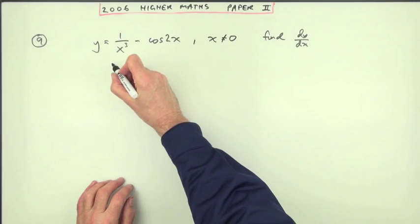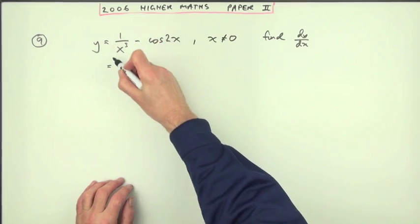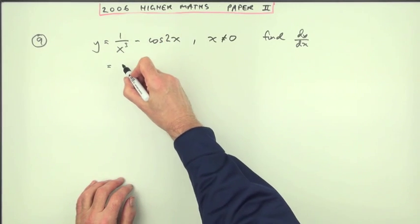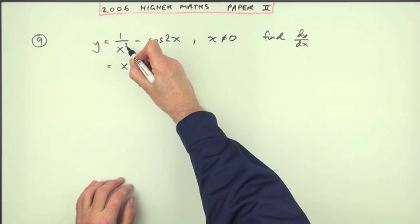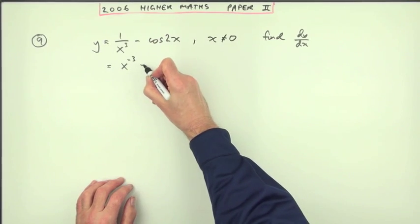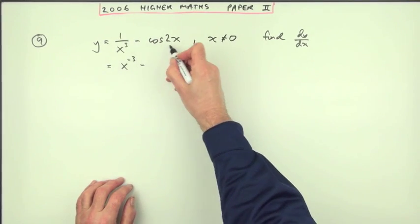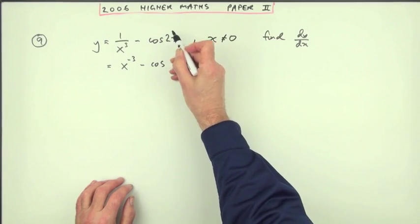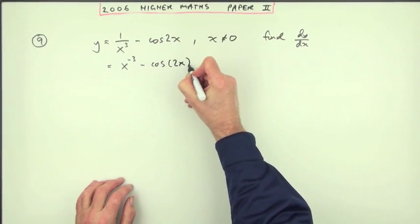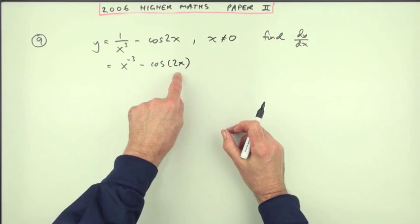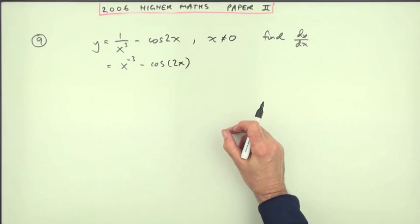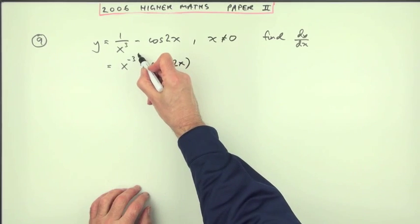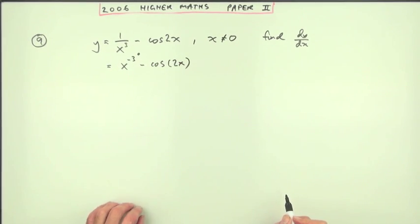The first thing is, at this level, write any term with x in index form first. So I'll have to write that as, since it's power 3 underneath, as x to the negative 3. And since I'm wasting a line to do that, I might as well just emphasize the fact that this is the cos not just of x but of 2x. So I'll put that in a bracket to show that it's a function of a function. Now so far, that's worth one mark for expressing it in index form.